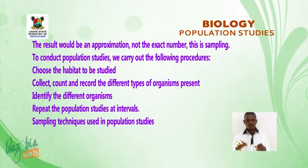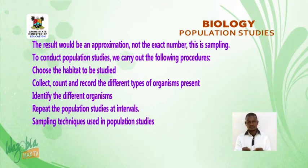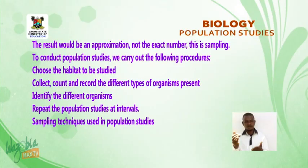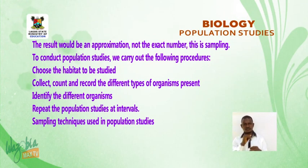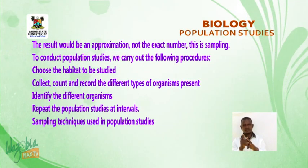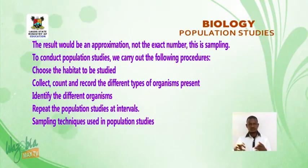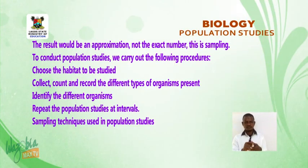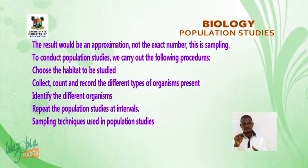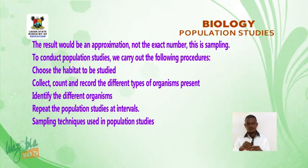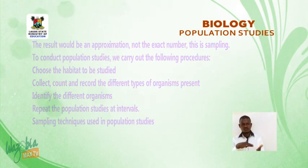To conduct population studies, we carry out the following procedures: choose the habitat to be studied; select the sampling method to be used; collect, count and record the different types of organisms present; identify the different organisms; and repeat the population studies at intervals.